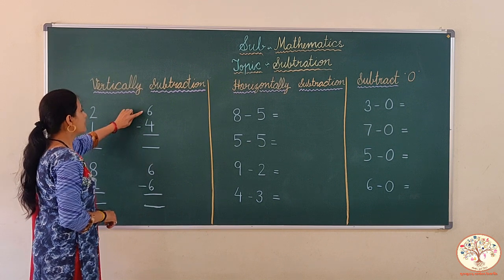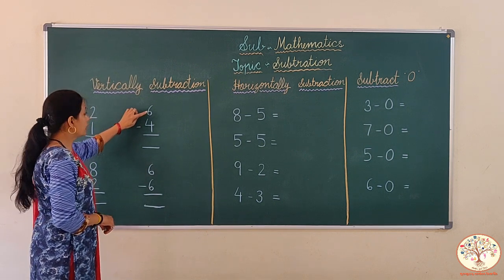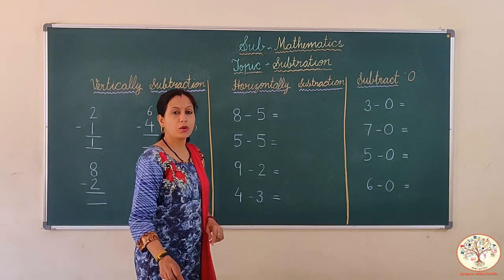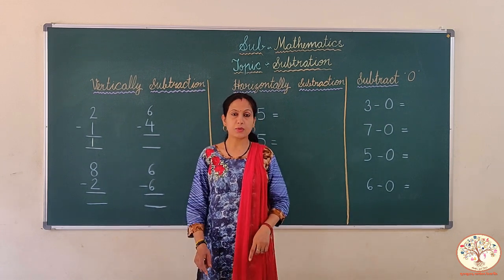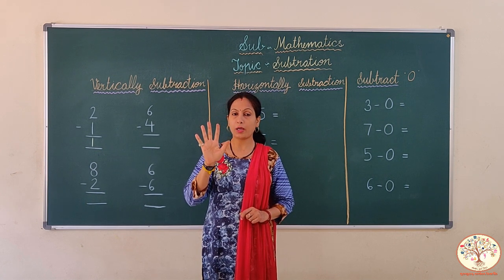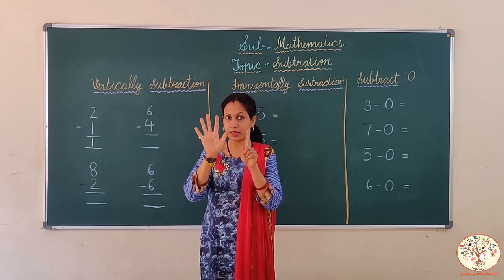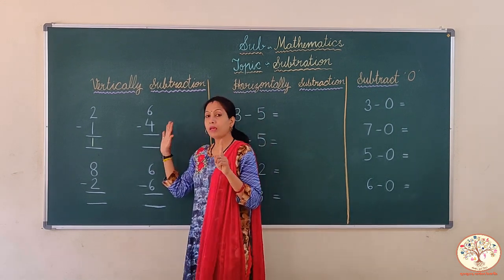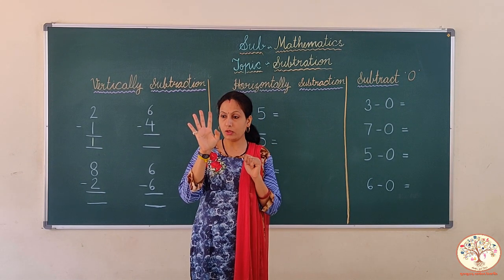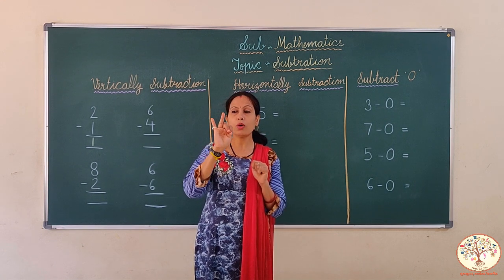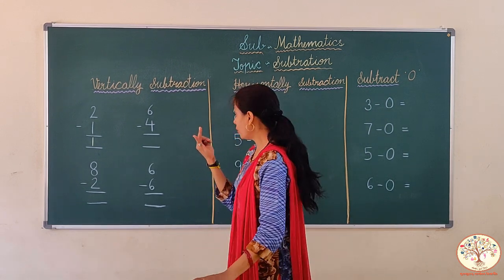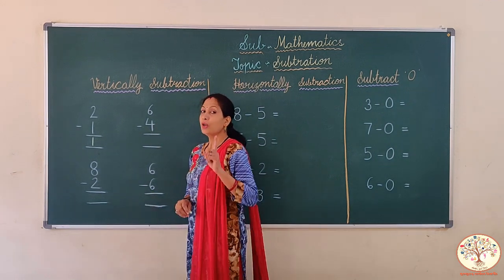Now look here. 6 minus 4. 6 में से हमें कितना minus करना है? 4. So we will do again on fingers. Open your 6 fingers: 1, 2, 3, 4, 5 and 6. 6 fingers open — कितना minus करना है? 4. So we will close our 4 fingers: 1, 2, 3, 4. How many fingers remain? 2. Only 2 fingers. So 6 minus 4 equals 2.